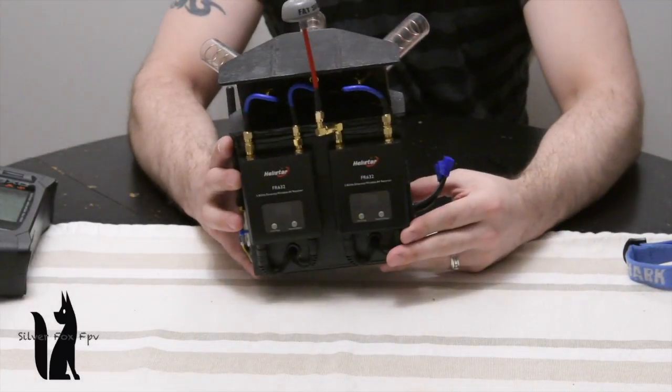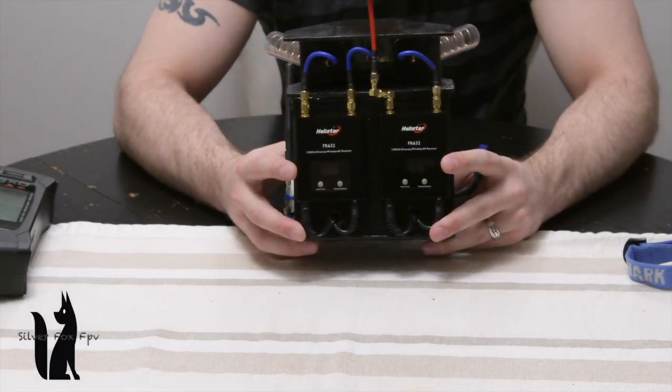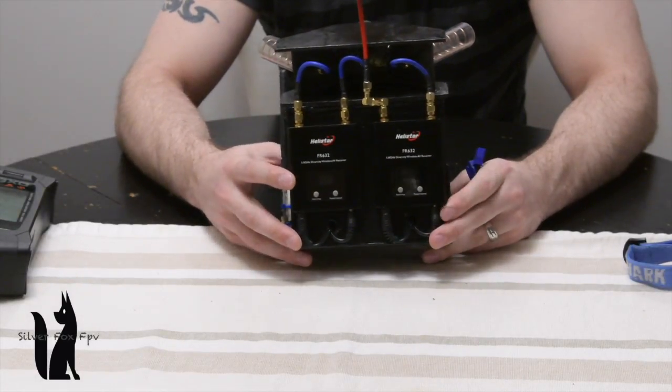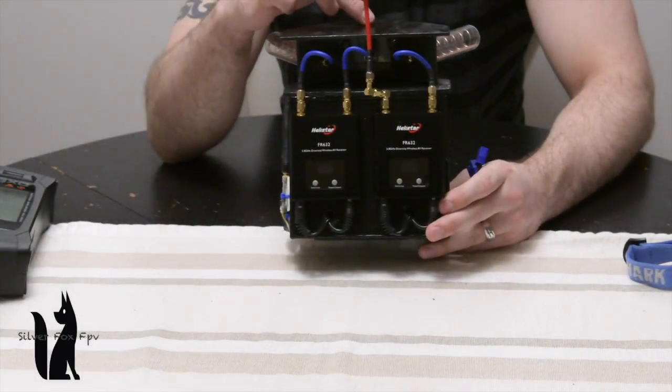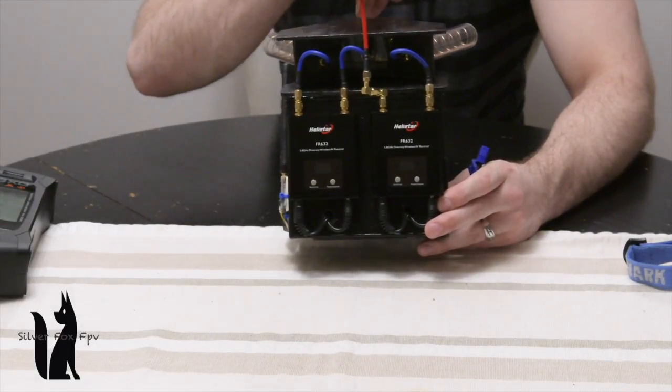You can see in the back here, two of the antennas, two of the helicoils go to the one Helistar and then one of the helicoils go to the other Helistar and then the circular polarized antenna picks up on the fourth pickup.